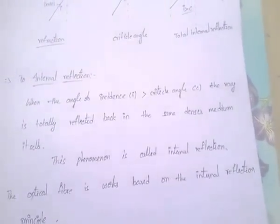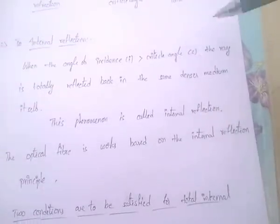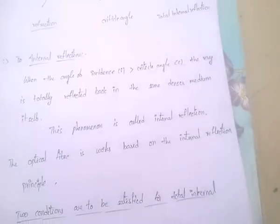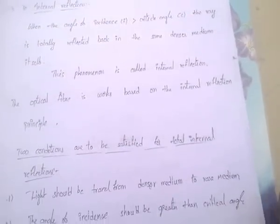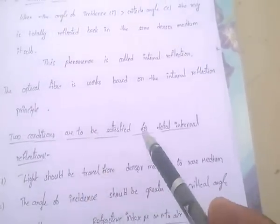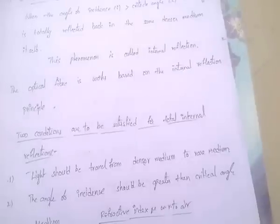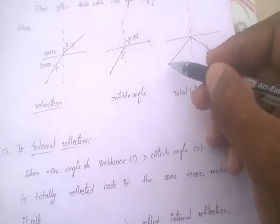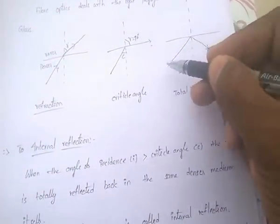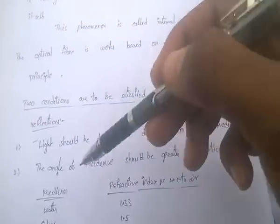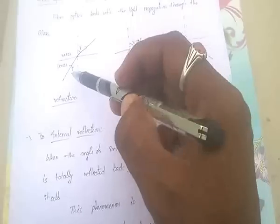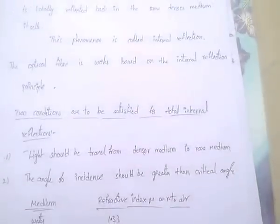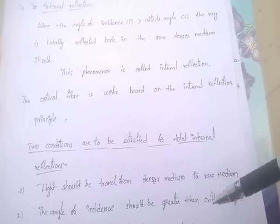Optical fiber transfers light energy from one place to another with negligible loss. Two conditions must be satisfied for total internal reflection: first, light should travel from denser medium to rarer medium; second, the angle of incidence should be greater than the critical angle. When both conditions are met, the total internal reflection phenomenon occurs.